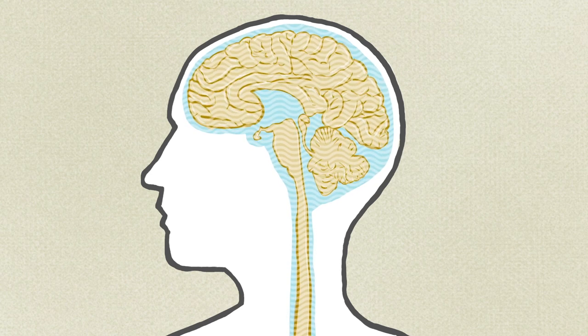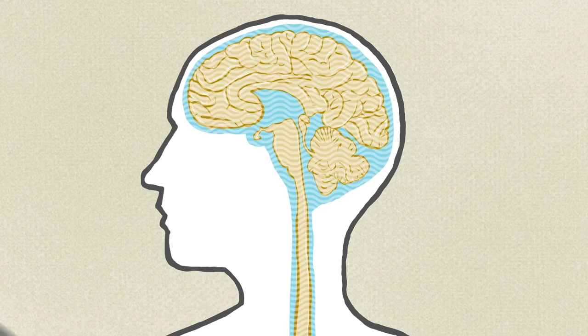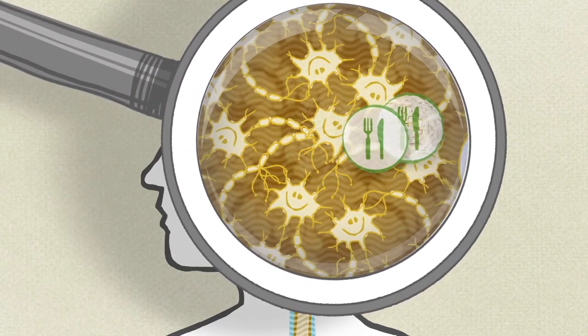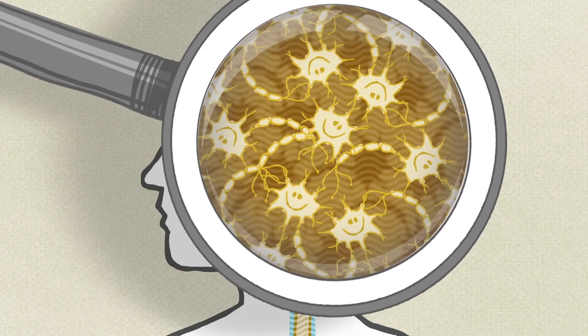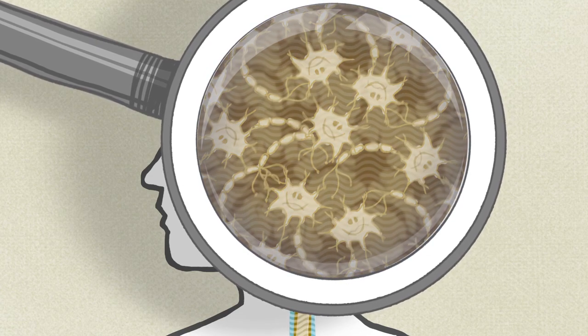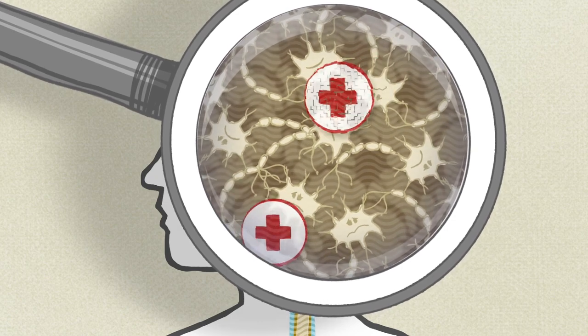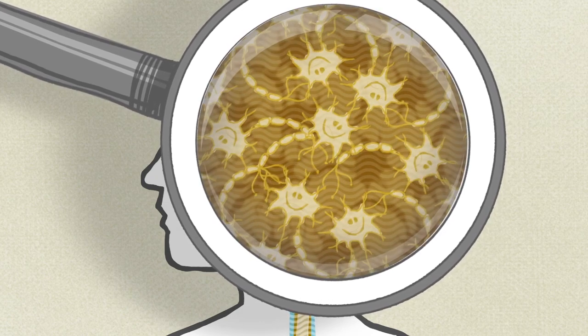Our brain and our spinal cord are surrounded by spinal fluid, the so-called liquor. This fluid protects and nourishes our nerve cells. It gives doctors a unique opportunity of detecting illnesses of the nervous system, or to give medication that should act directly on the nervous system.